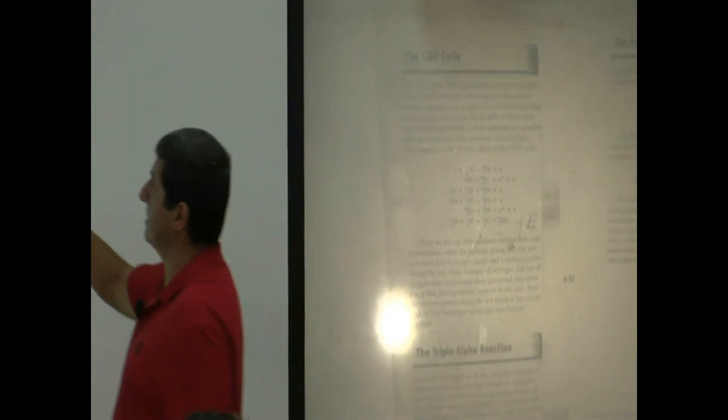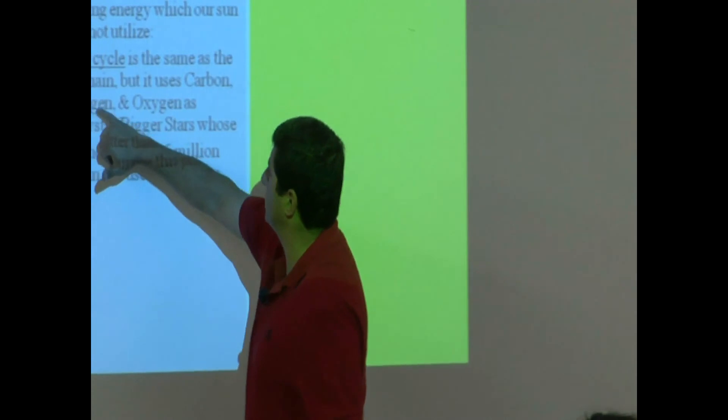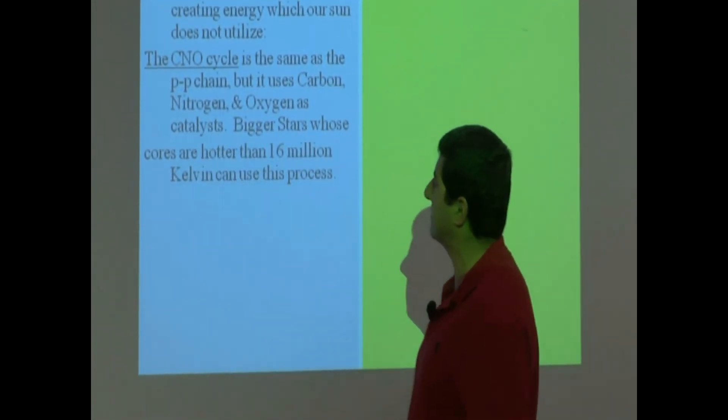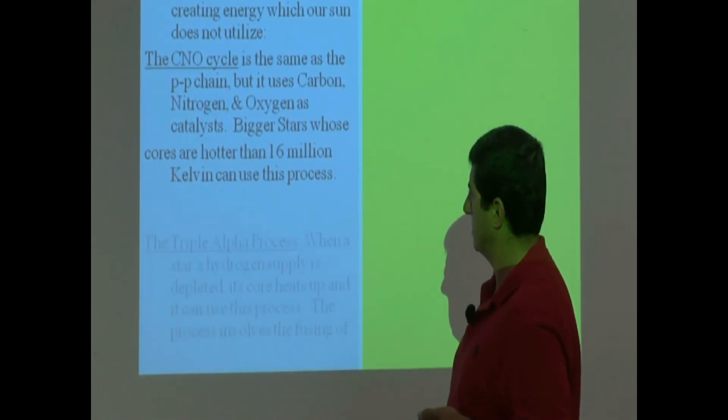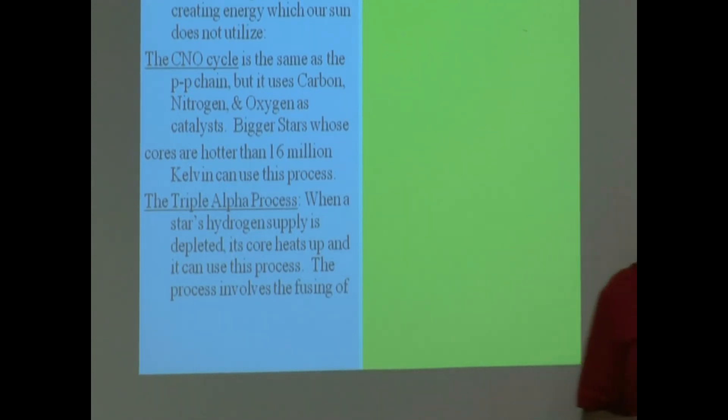Bigger stars and hotter stars use this. So it's pretty much the same as PP chain, and it's using carbon, nitrogen, and oxygen as a catalyst for the reaction.